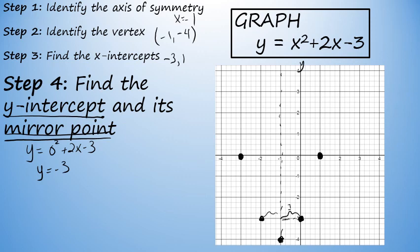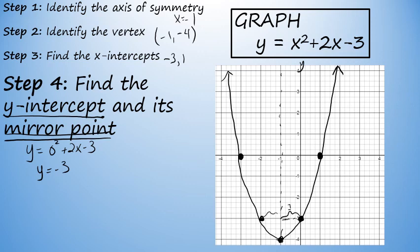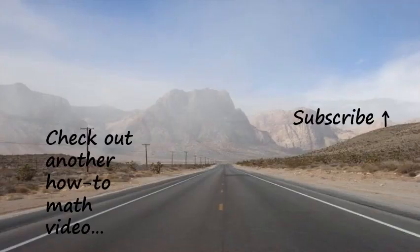I have now plotted five points on this parabola. Joining them with a smooth curve gives the graph of y equals x squared plus 2x minus 3. All the points on this curve, written as ordered pairs, are solutions to y equals x squared plus 2x minus 3.